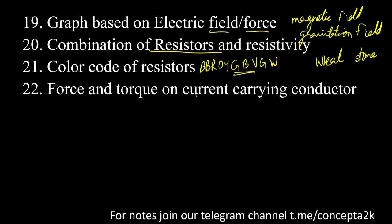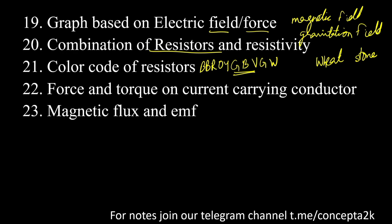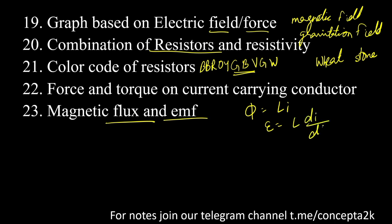Force and torque on a current-carrying conductor — very important. Magnetic flux and EMI are very important. Magnetic flux is equal to L times I. EMF is equal to L times dI/dt. This is the basic formula for these questions.